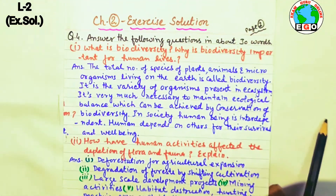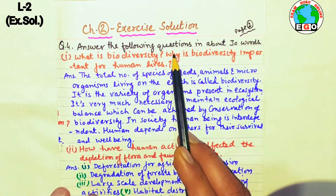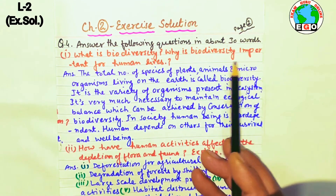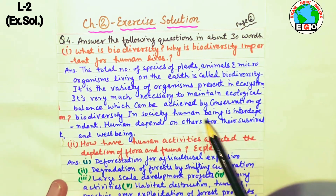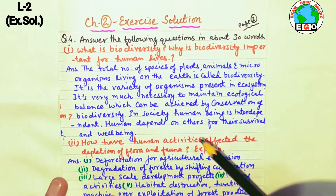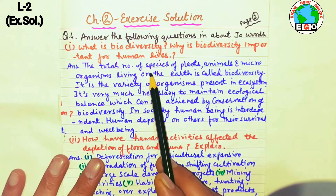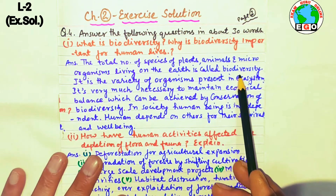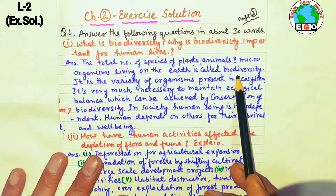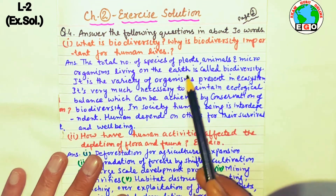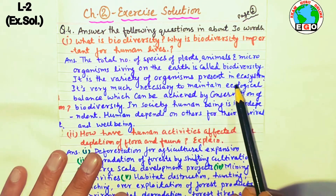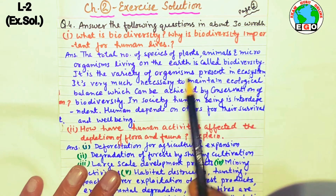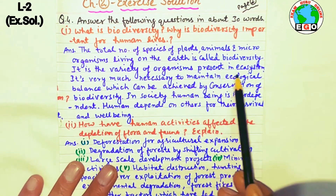Next question: answer in about 30 words — what is biodiversity and why is biodiversity important for human life? Biodiversity is the total number of species of plants, animals, and micro-organisms living on the earth. In Hindi it is called 'Jeev Vividhata.' The variety of organisms present on earth forms the biodiversity.